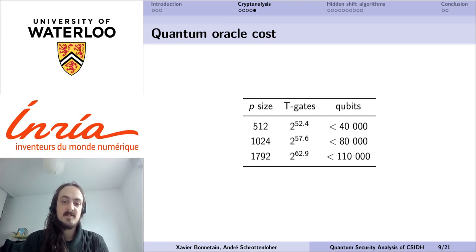Overall, this allows us to have some cost estimates for this oracle, so for the three proposed instances of CSIDH that range from 2 to the 52 gates to 2 to the 63, with a limited number of qubits, so up to hundreds of thousands of qubits. Of course, some other trade-offs are possible between the number of gates and the number of qubits. You can trade between them, depending on the amount of available resources you have.